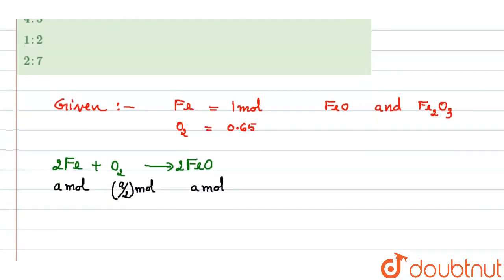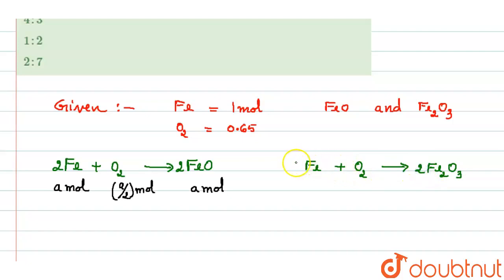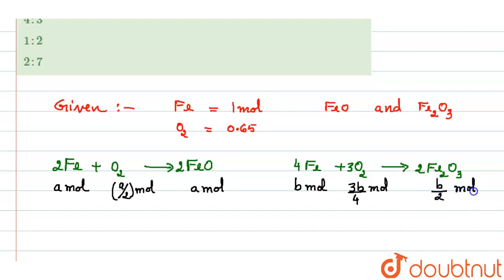Now for the second product: when Fe reacts with oxygen in excess, it also produces ferric oxide Fe₂O₃. Balancing this equation gives 4Fe + 3O₂ → 2Fe₂O₃. Taking the 4 moles of Fe as 'b' moles, then O₂ will be 3b/4 moles, and Fe₂O₃ will be b/2 moles.